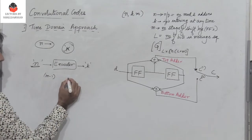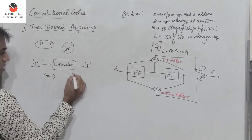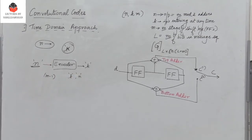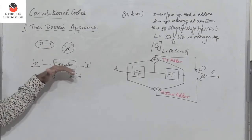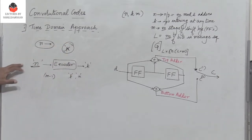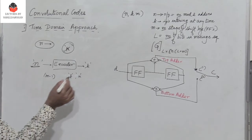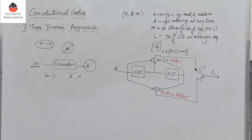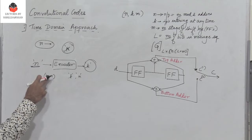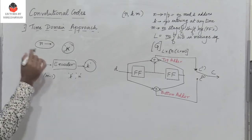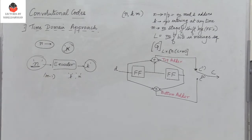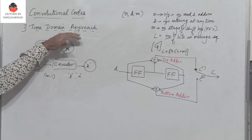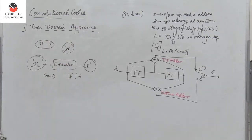Here, the values of k and n are pretty small. So the basic difference between a convolutional code and a block code is that the output n produced by a convolutional encoder is not only dependent on the given k message digits at that time interval, but is also dependent on the preceding n minus 1 blocks of message. There are two approaches to find the output of a convolutional encoder: the time domain approach and the transform domain approach.